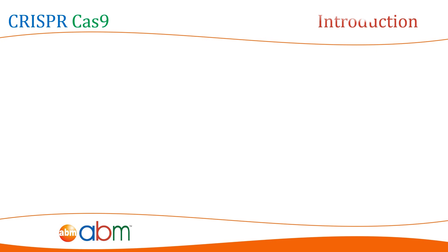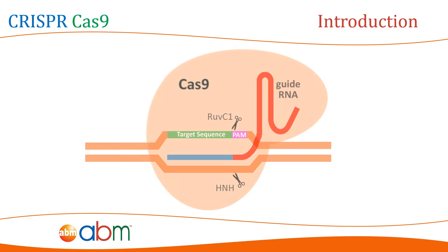The RNA-guided CRISPR-Cas9 system has revolutionized genetic engineering by allowing targeted genomic modification through the simple design of a 20 base pair guiding sequence. This groundbreaking technology utilizes a short guide RNA, sgRNA, to direct the Cas9 nuclease to a specific genomic locus through complementary base pairing.